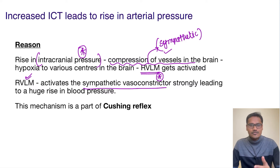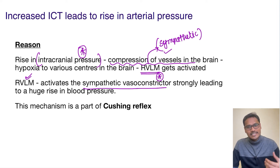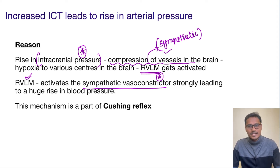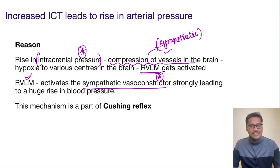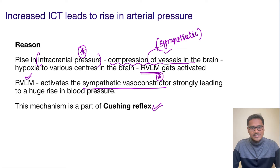So this is a form of ischemic response which is seen in raised intracranial tension. When seen in other conditions it is also called the CNS ischemic response. Whenever it is due to raised intracranial tension it is specifically called the Cushing reflex. So this mechanism is part of the Cushing reflex — let's see what this Cushing reflex involves.